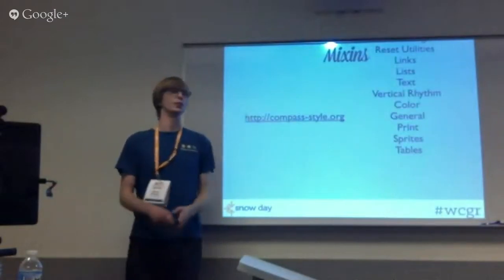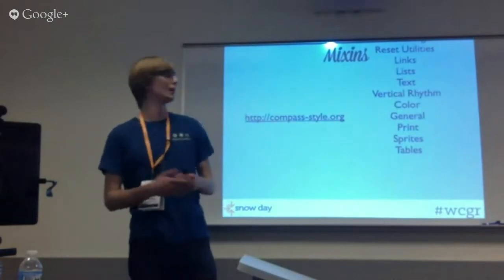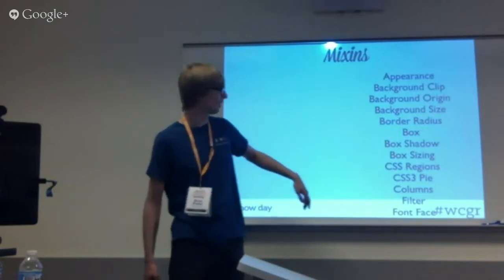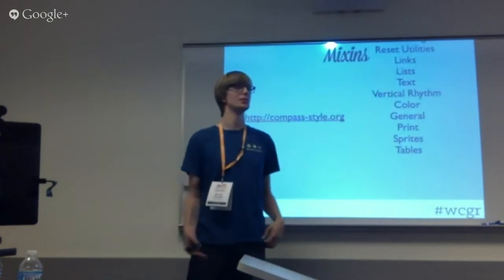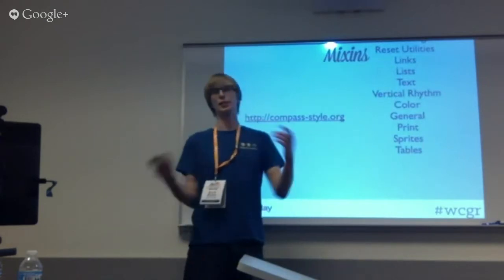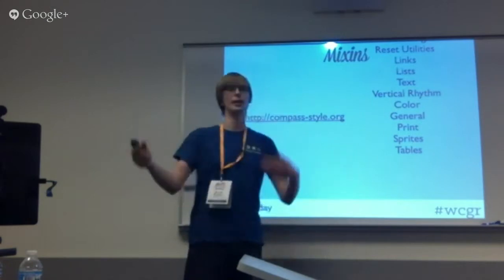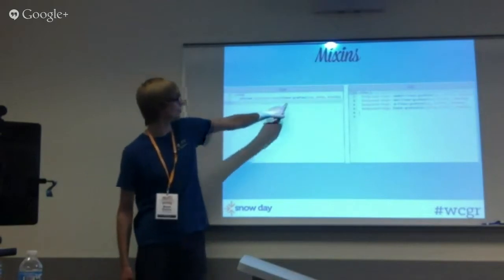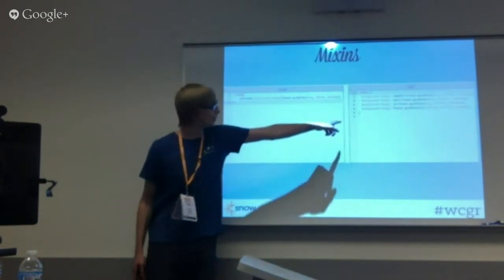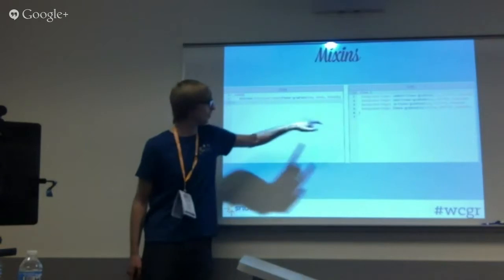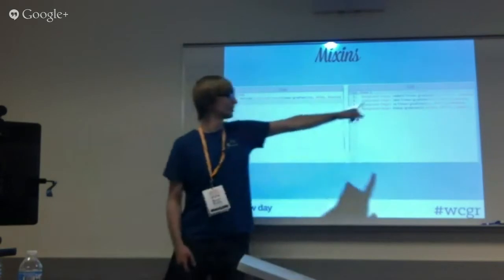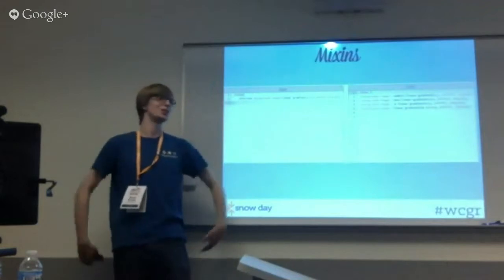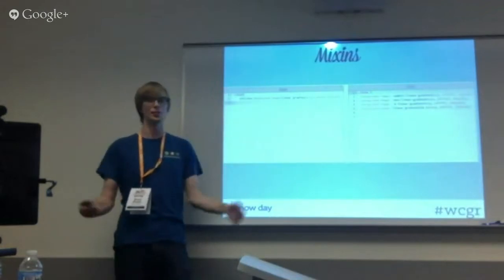Here's an example: @include background-image(linear-gradient(...)) and it generates all the vendor-prefixed CSS. Compass and Bourbon are just huge libraries of those mixins that people have already made, so you don't have to recreate them.